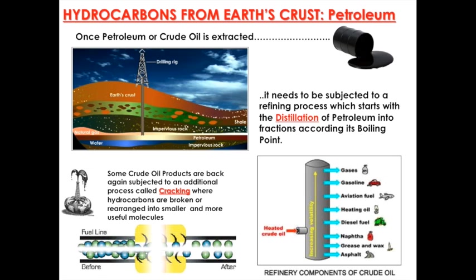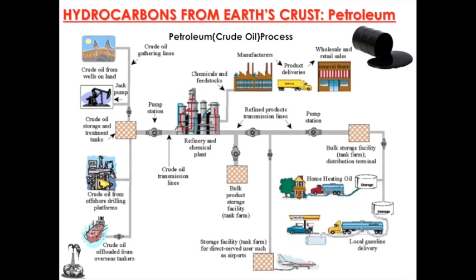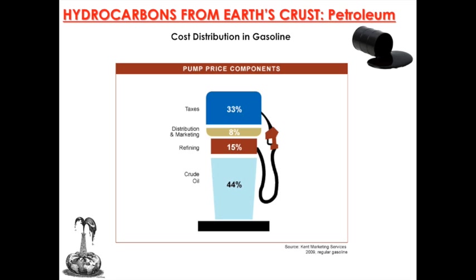Some crude oil products are again subjected to an additional process called cracking, where hydrocarbons are broken or rearranged into smaller and more useful molecules. From the gasoline we buy, typically 44% is the cost of crude oil, 15% is refining, 8% is distribution and marketing, and about 33% or more is taxes.